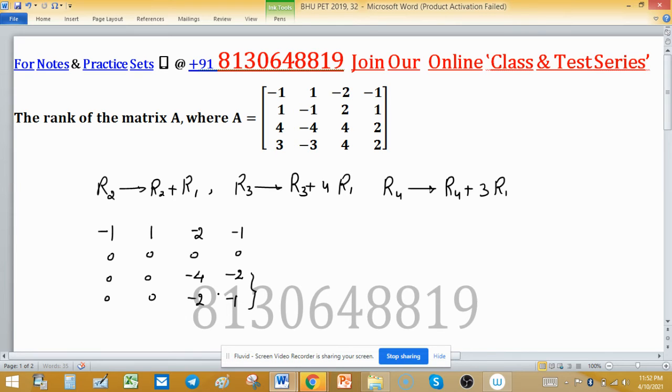So you can say that these two rows, the last two rows, are in proportion. So you can do one thing: divide this R3 by 1 upon 2. So this equivalent matrix is minus 1, 1, minus 2, minus 1; 0, 0, 0, 0; and this is 0, 0.